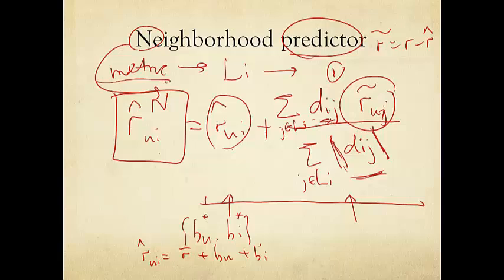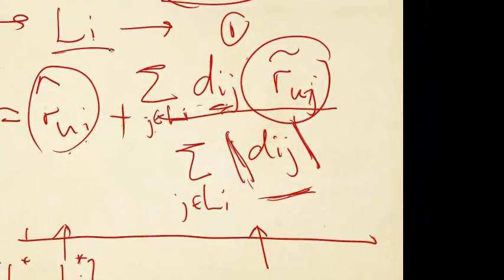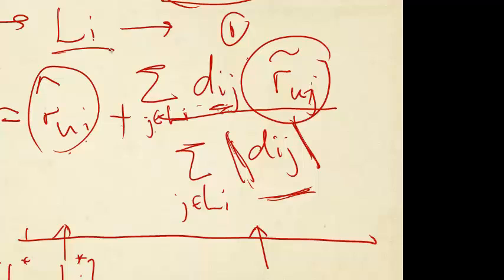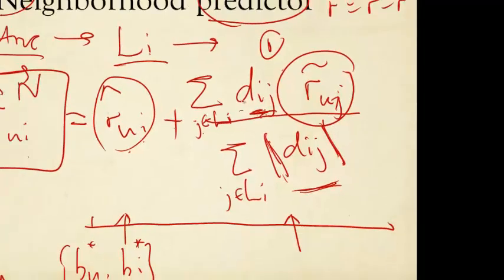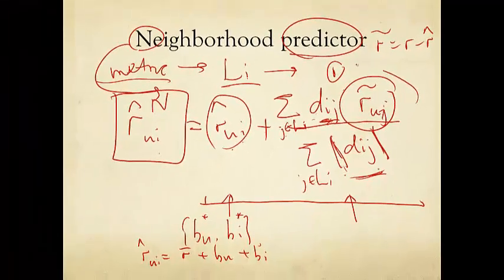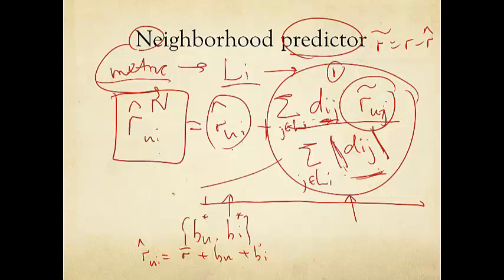The second term in the neighborhood predictor is the actual neighborhood information. Again, we use the cosine coefficient as the metric. Then for each movie i, we define a neighborhood of certain size. And then based on that, we say all those movies j in that neighborhood set will be weighted with a certain weight, for example, the Dij themselves, and then normalized. This is the total influence in the prediction of Ui.